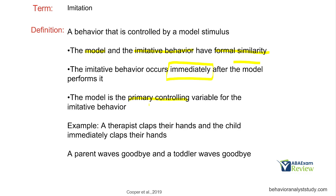Pretty straightforward. Example: a therapist claps their hands, and the child immediately claps their hands. Clapping is the controlling variable — formal similarity, happens immediately. Another example: a parent waves goodbye, and the toddler waves goodbye. Formal similarity, happens immediately. The primary controlling variable is the model.